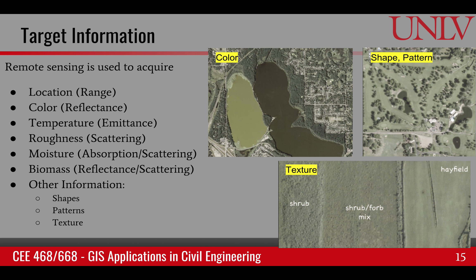The information from the target that we can acquire from remote sensing includes the location, which is basically called ranging. We can have color information about the surface which comes as reflectance, and we can tell the difference between surface features based upon that color. For example, two lakes have different color of the water, which means that the type of algae in the water is different. Based upon the emission from the surface, we can tell about surface temperature because the emissions are dependent on temperature based on the Stefan-Boltzmann law.